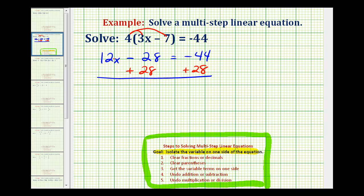Notice on the left side we have minus twenty-eight plus twenty-eight. That would simplify to zero. So now on the left we have twelve x, so that's progress, equals, and here we have negative forty-four plus twenty-eight, which would be negative sixteen.